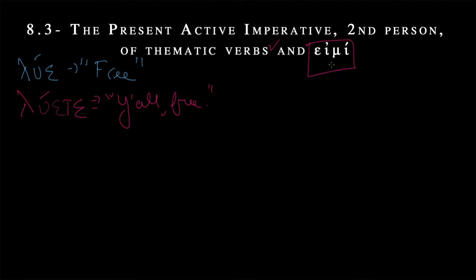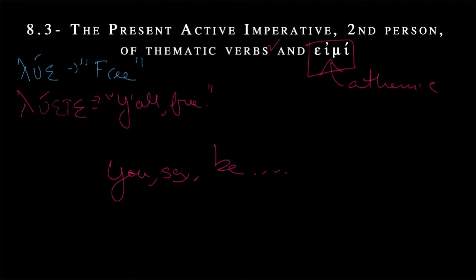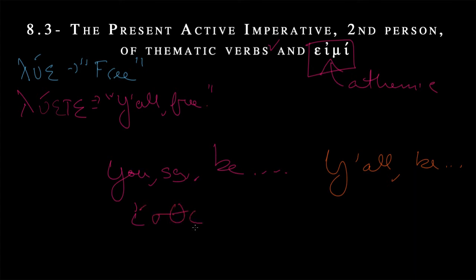Now we're getting to that final bit where everything was completely regular for these thematic verbs. Now we need to get to that stinky athematic irregular verb: ami — 'I am, be.' So what we're looking at is 'you singular, be' and 'y'all, be.' In the singular, this is done in a very irregular way. The form is isthi. We'll see some more forms that look a bit like this in the future, but for now this is really weird. It ends in theta-iota. There's this s, and we know that the root of all these ami verbs tends to be this s.